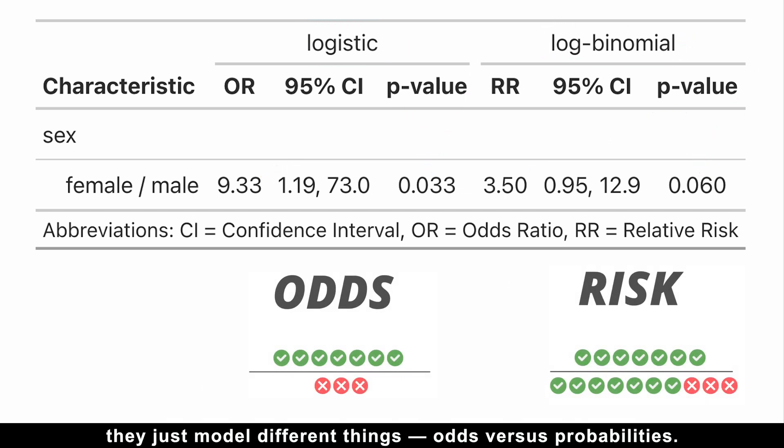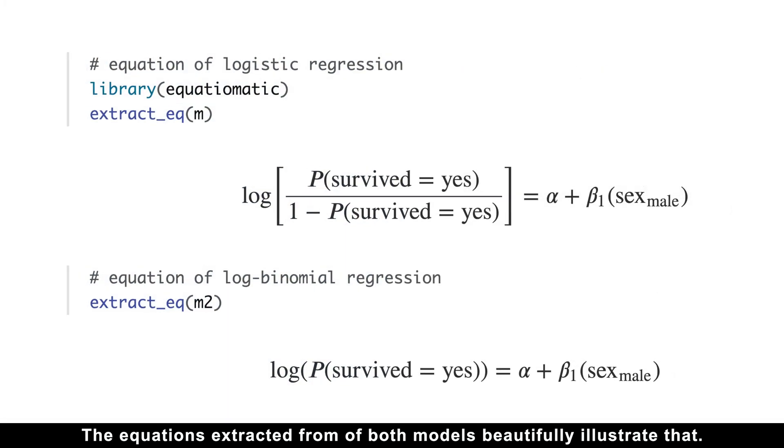Now, I hope you see why odds ratio and risk ratio models sometimes disagree on significance. They just model different things, odds versus probabilities. The equations extracted from both models beautifully illustrate that.